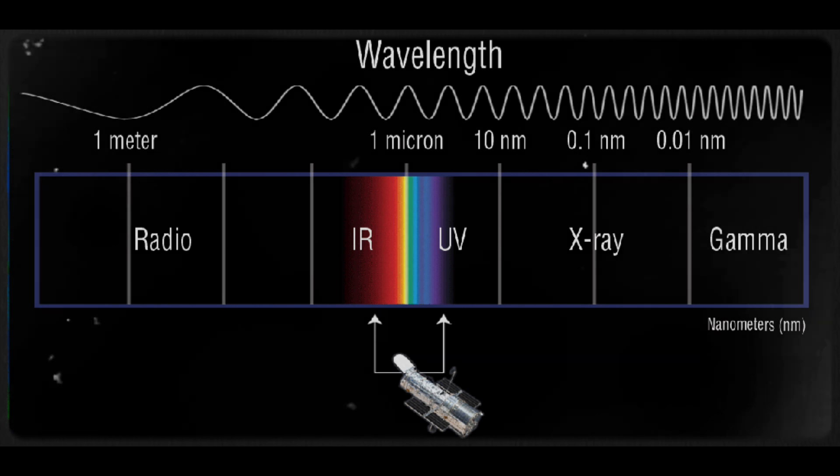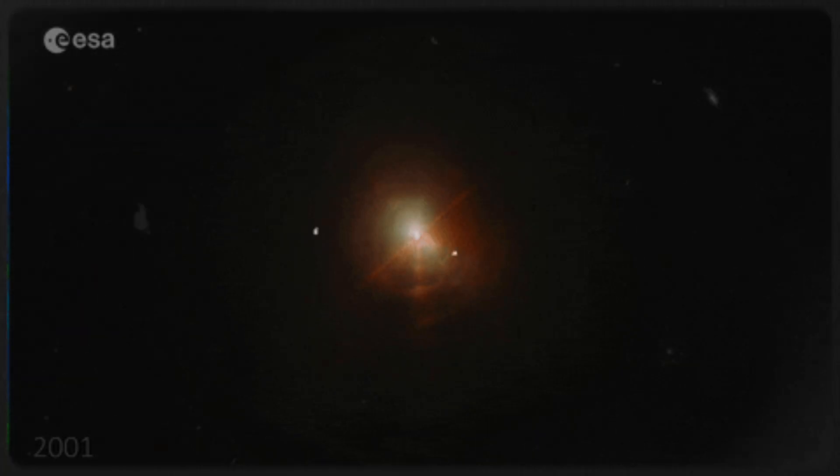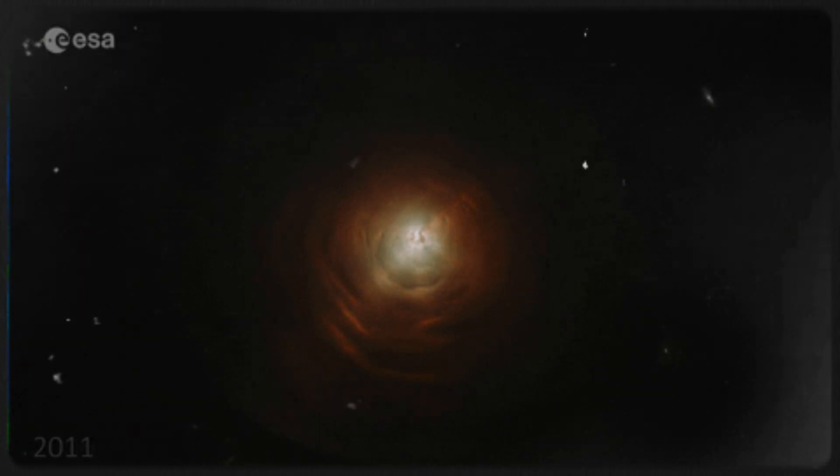Hubble's ultraviolet light spectroscopic studies, which kicked off in January 2019, played a crucial role in unraveling the mystery behind Betelgeuse's dimming.